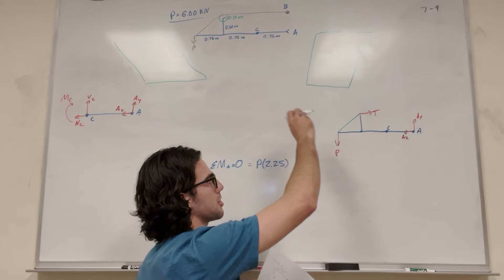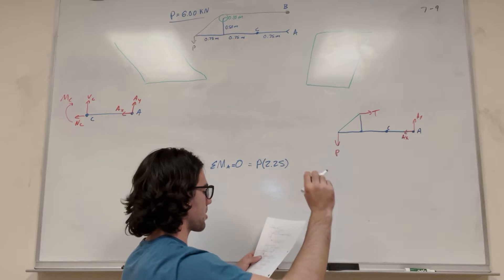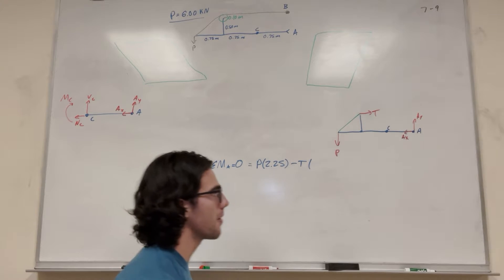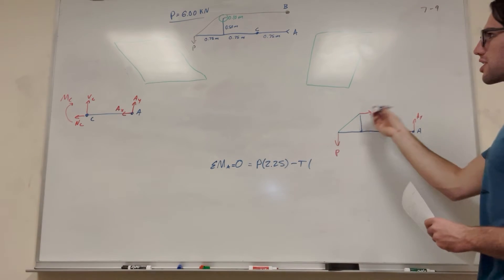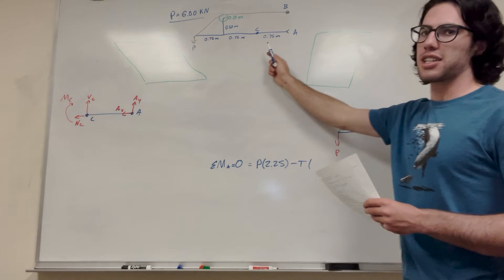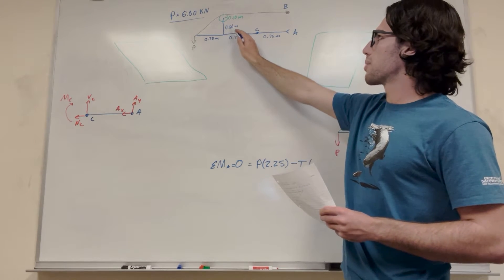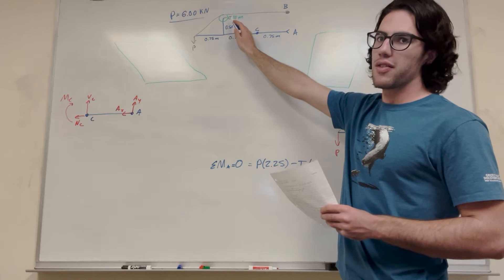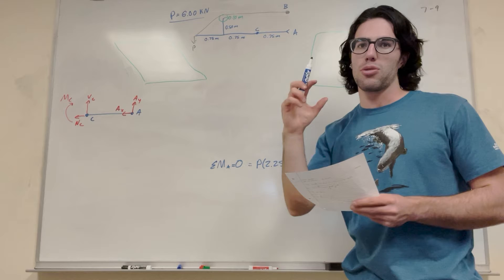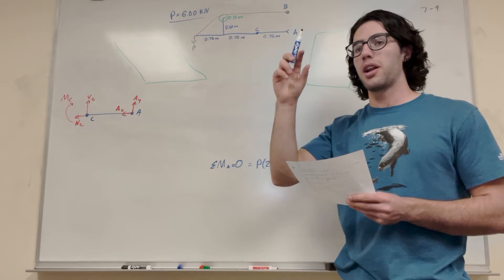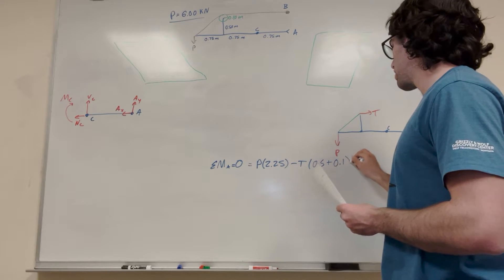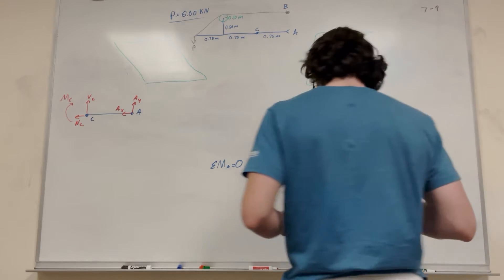So then tension, tension's pulling this way. That's going to make us want to go clockwise. So we're going to subtract T. So minus T. And then what's the distance for T? So T is pushing in the X direction, so we're looking for vertical distance. And if we look back at our diagram here, at our picture, we know that the rod goes up 0.5 meters, and then the radius of the circle is another 0.1 meter. So that means that its vertical distance is 0.5 plus 0.1. And that's all we have here.